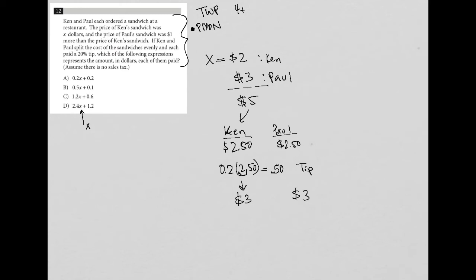Because they pay $2.50 for the sandwich plus a 50 cent tip. So they each paid a 50 cent tip. So they're going to end up paying a total of three dollars. So which of the following expressions represents the amount in dollars each of them paid? Well, I just found out how much they each paid is three dollars.